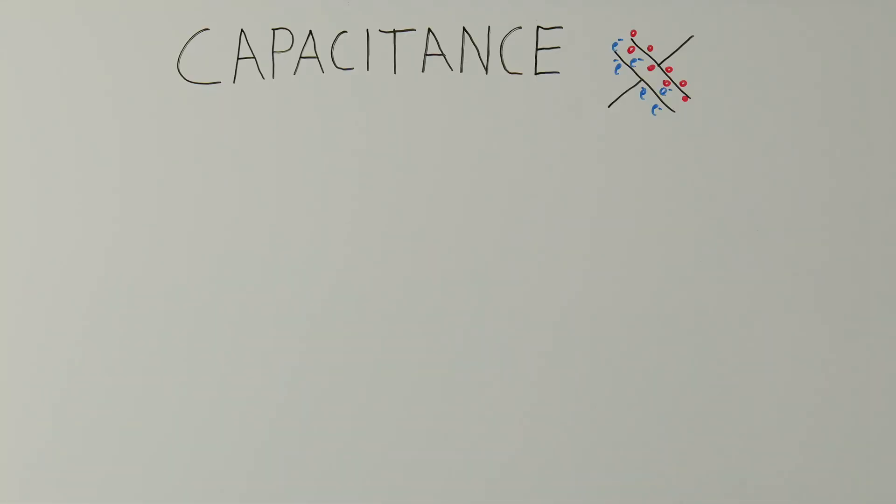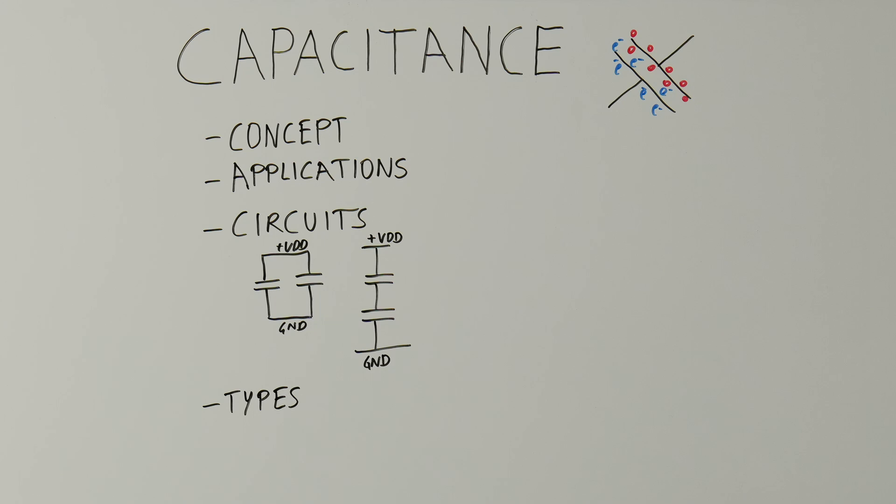In this lecture, we are moving on to our next electronic component, the capacitor. We'll start by exploring the concept of capacitance, then move on to understand the structure of capacitors, their various applications, capacitor circuits, and the different types of capacitors encountered in flight computer development.